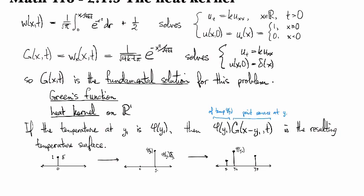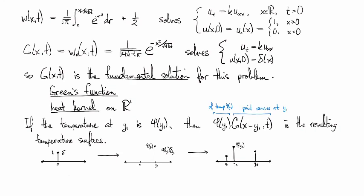And so by superposition, we can just add all of these together. So from this one that we had before, we are led to something that looks like a sum. There's the resulting temperature surface for a collection of point sources with different magnitudes.